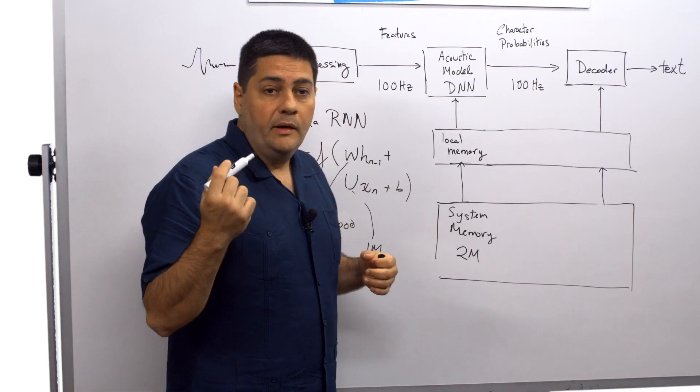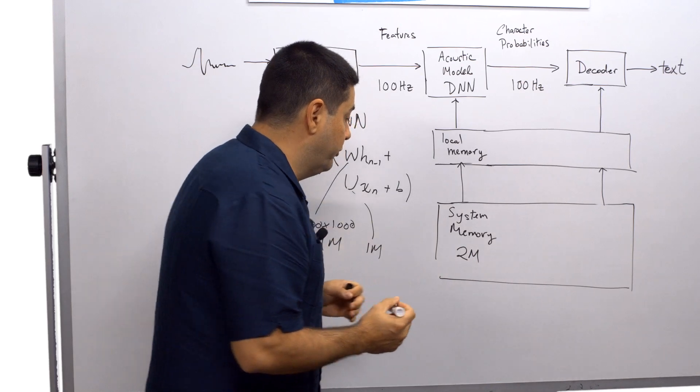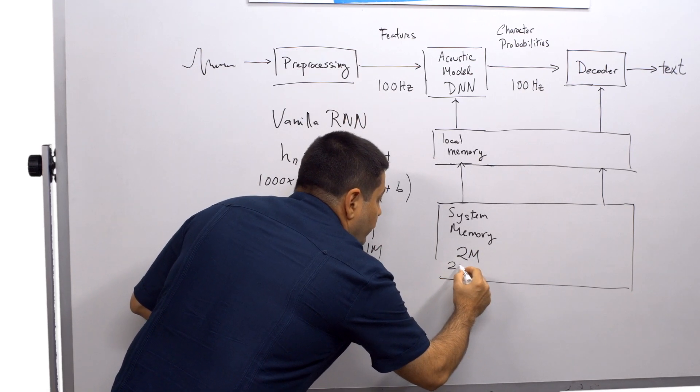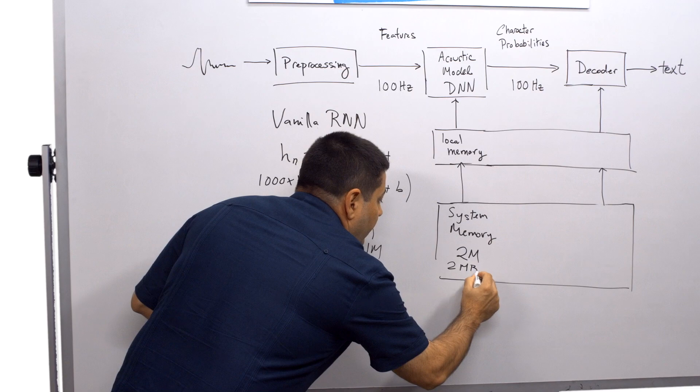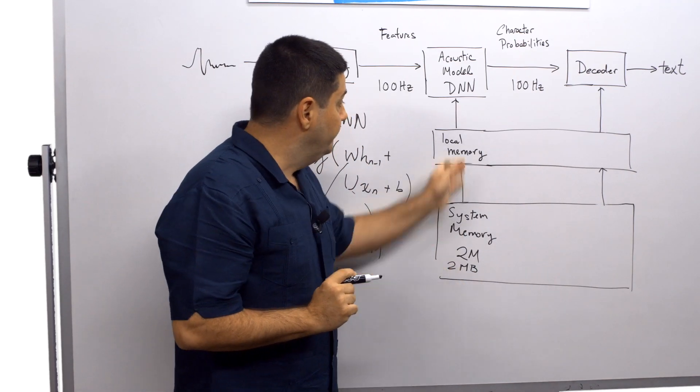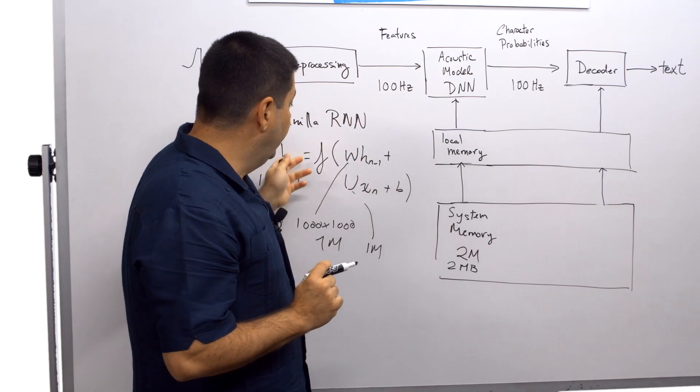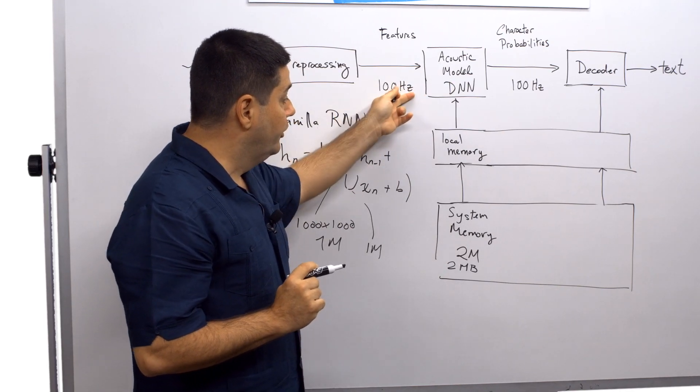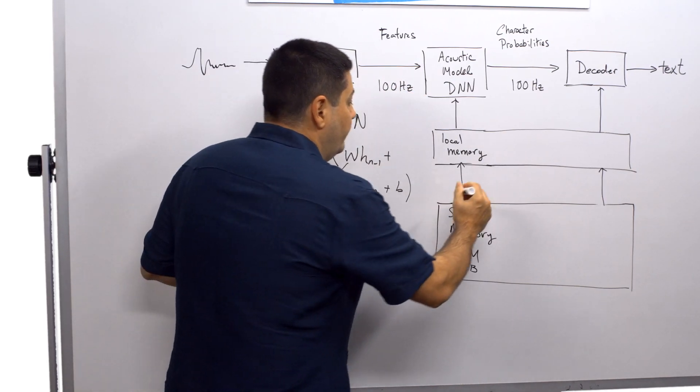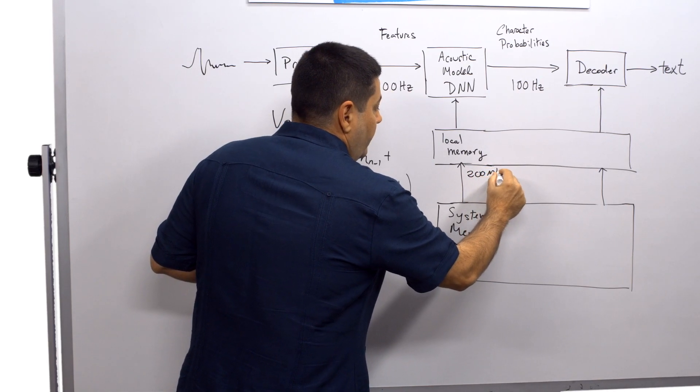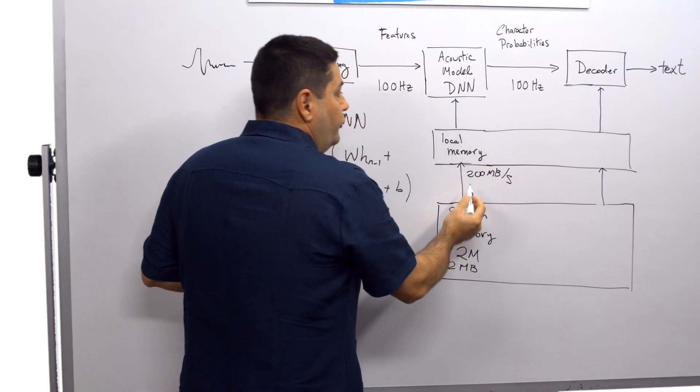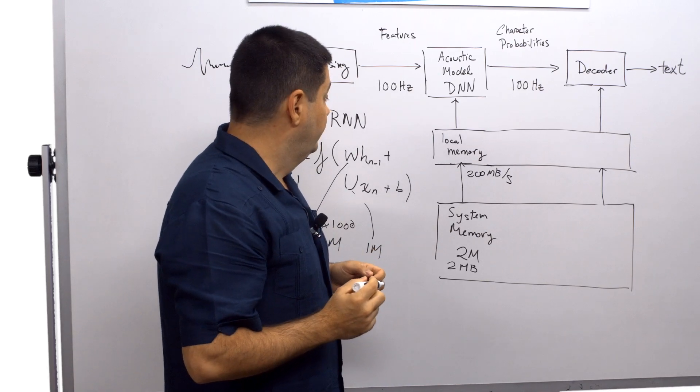If we assume 8 bits for each one of those parameters, now we have 2 megabytes of data going in. And if we assume that this RNN has to be updated at a rate of 100 hertz, then we have 200 megabytes per second streaming into this system.